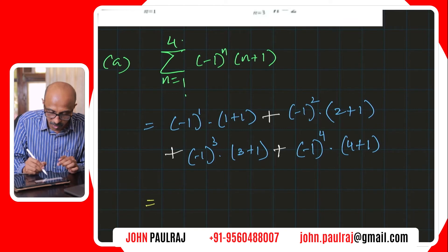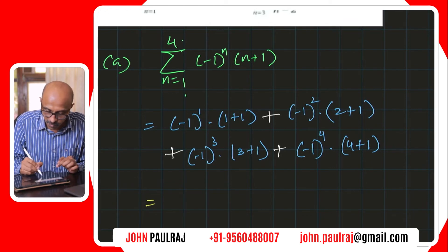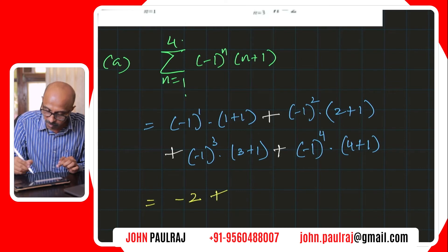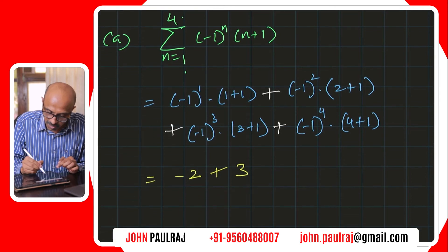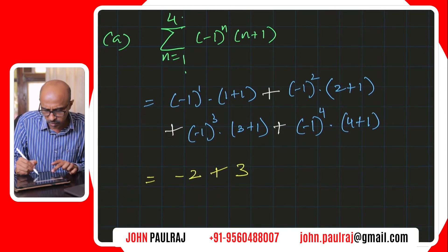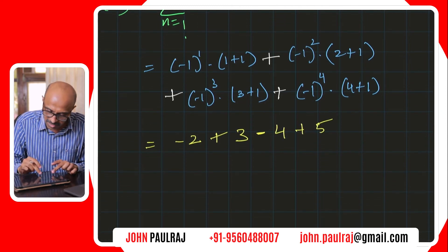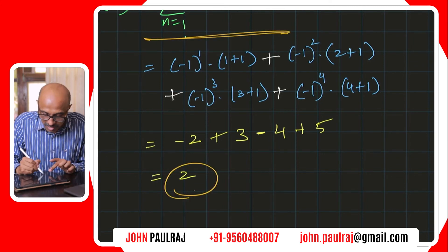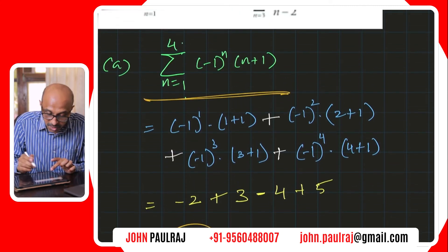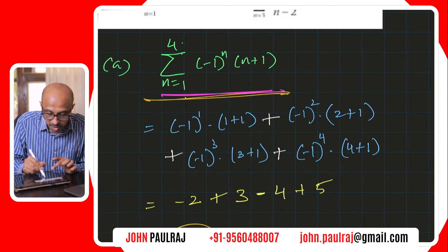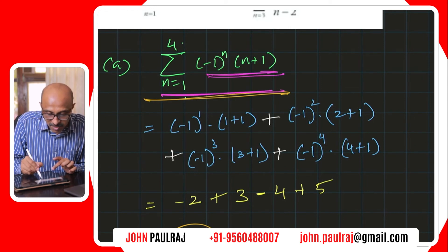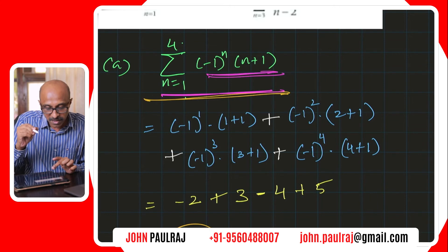Now we simplify and evaluate. Negative 1 to the power of 1 is negative, giving negative 2. Negative 1 squared is positive, giving plus 3. Negative 1 cubed is negative, giving negative 4. And negative 1 to the power of 4 is positive, giving plus 5. So the value is 5 plus 3 minus 2 minus 4, which is 8 minus 6, equals 2. That is the sum of the first four terms of the sequence whose Nth term is negative 1 to the power of N times N plus 1.